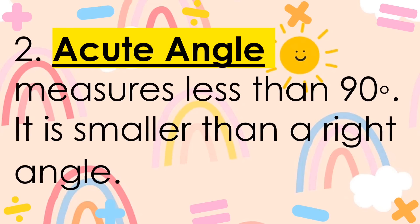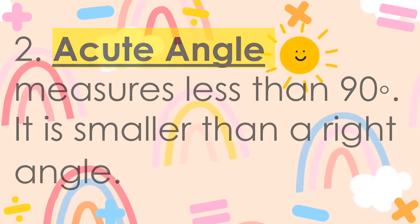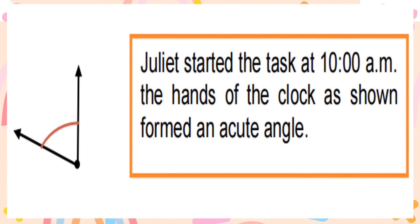The second type is the acute angle. When an angle measures less than 90 degrees, it is smaller than a right angle — we call that an acute angle. One example: Juliet started the task at 10 o'clock in the morning, and the hands of the clock as shown formed an acute angle.